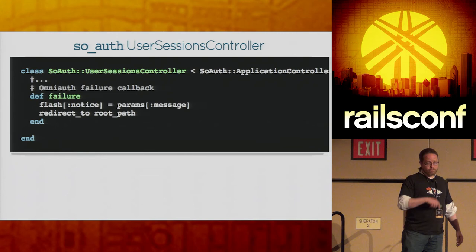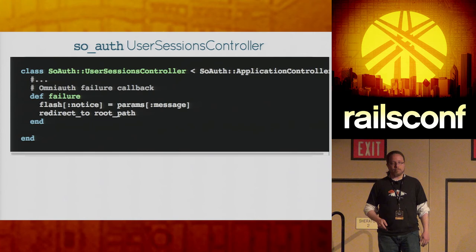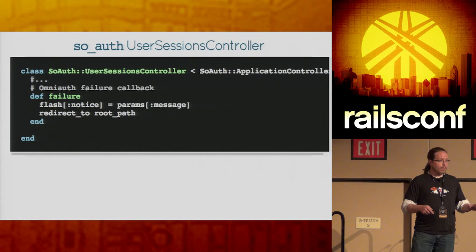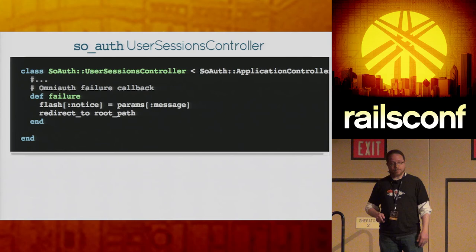The failure route implementation is rough — basically just pull the notice out of the request that OmniAuth sets up and then redirect back to the root path. This isn't very elegant, and you could definitely do better failure handling, but it will get the job done and communicate what's happening.